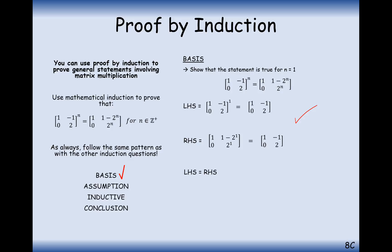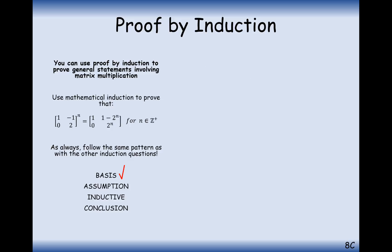Left-hand side equals right-hand side. The next step is to assume that our theorem is true for n equals k. So we can assume that this matrix to any power k can be simplified to (1, 1 minus 2^k; 0, 2^k) — with 1 minus 2^k in the top right, 1 and 0 on the left column, and 2^k in the bottom right cell.